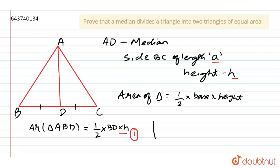Now, considering the triangle, area of triangle ADC. The area would be half into DC into H. So this would be the equation two.